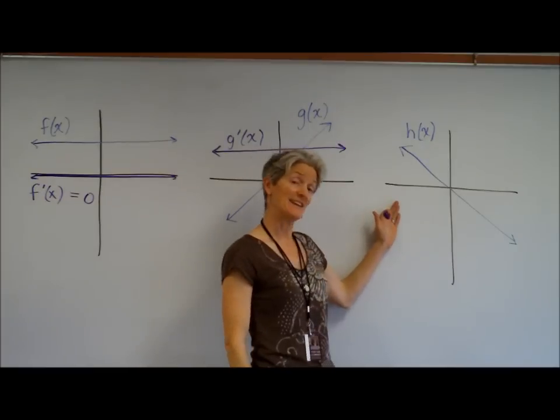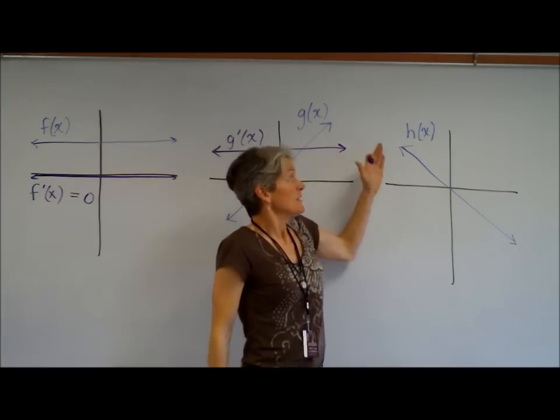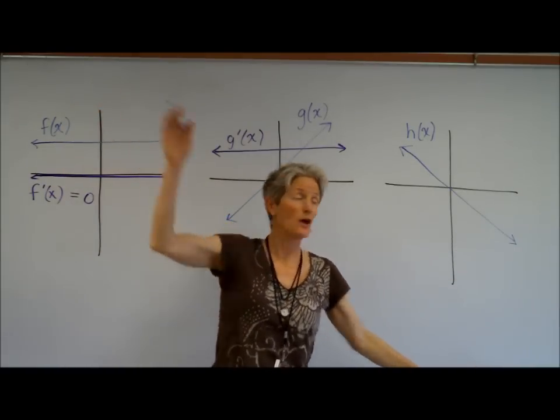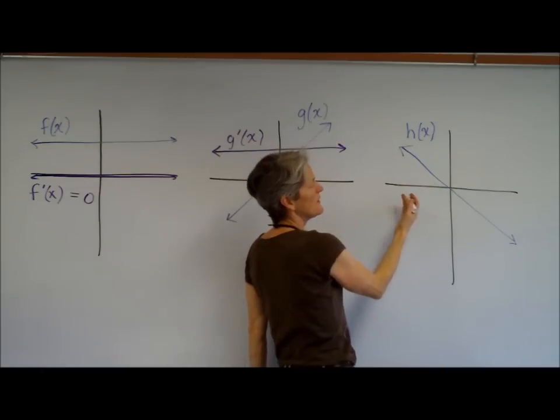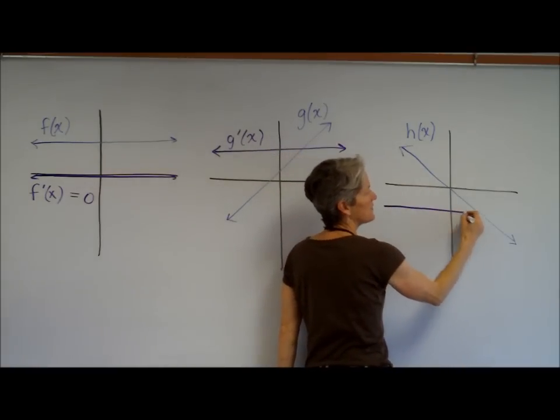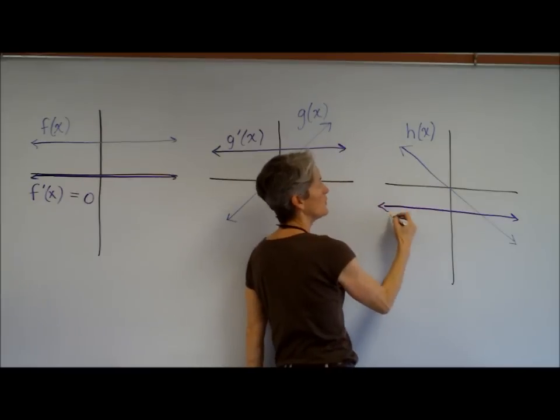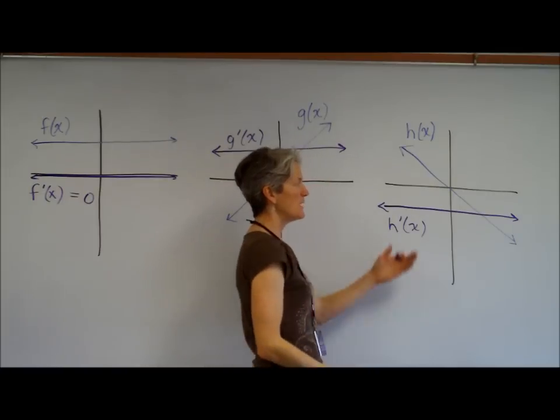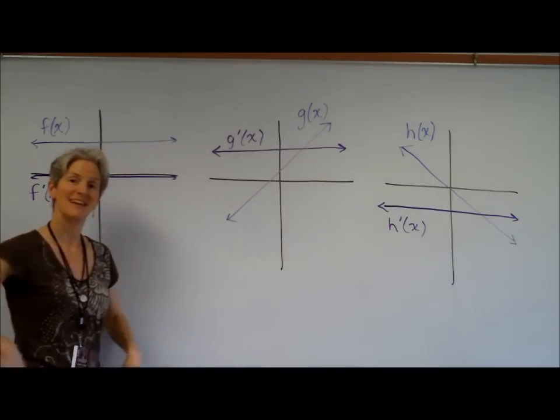H of x, again a linear function. Constant slope, this time a negative constant slope, which means its derivative is going to be negative some constant. I don't know exactly what, since I don't have any scale, that it would look something like that. There you have it.